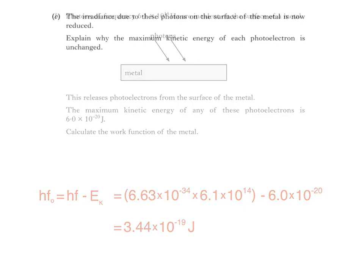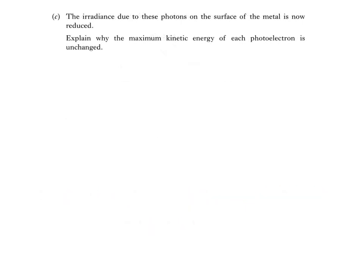Finally, part C says the irradiance due to these photons on the surface of the metal is now reduced. Explain why the maximum kinetic energy of each photoelectron is unchanged. We can use the equation from part B to answer this. If irradiance is reduced, but the frequency of the photons remains constant,